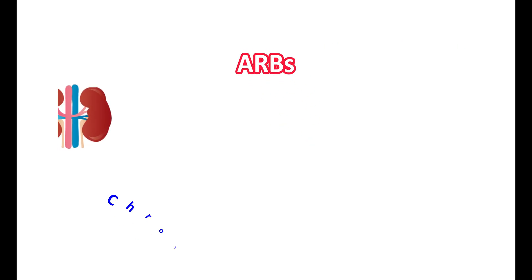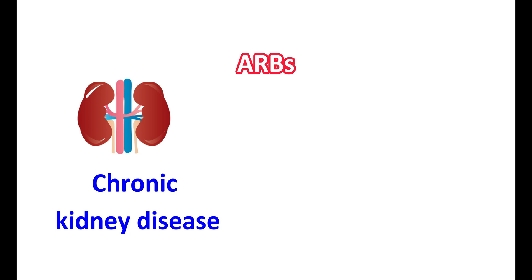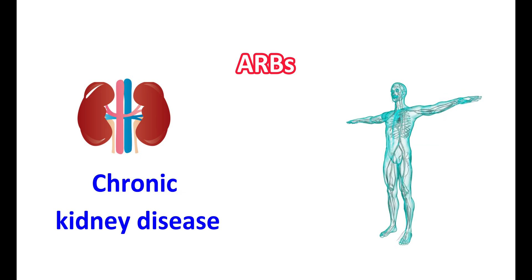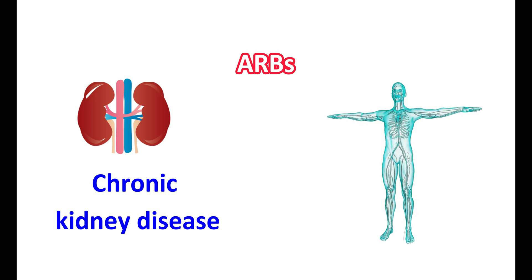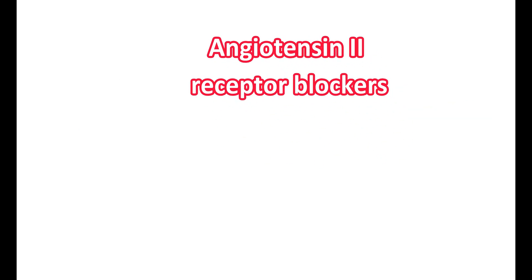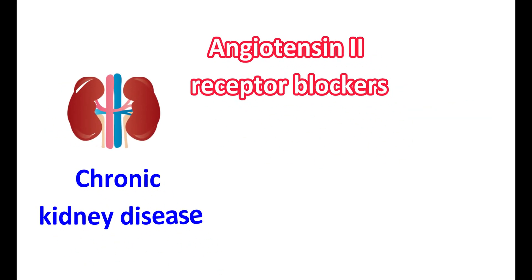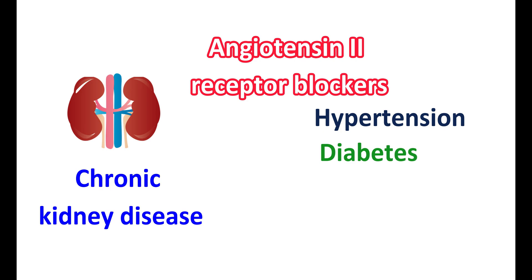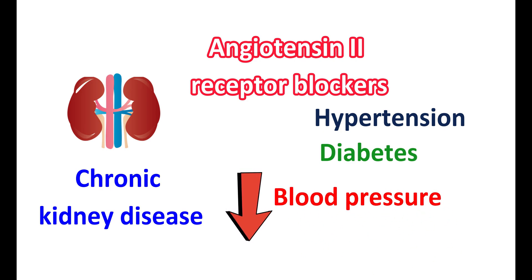ARBs can also be used in the treatment of chronic kidney disease, commonly called CKD. CKD is a progressive condition where kidneys are unable to filter properly, leading to accumulation of waste and excess body fluids. ARBs are commonly used in managing CKD, particularly in people who have either hypertension or diabetes. ARBs reduce blood pressure by blocking the effects of angiotensin 2, reducing the workload on the kidneys and increasing their filtering capacity.